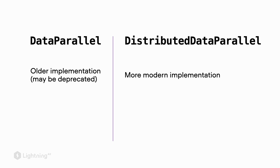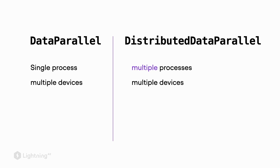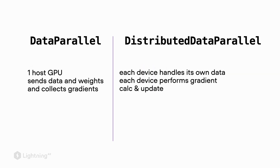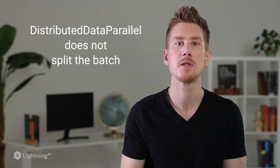To summarize the differences: DataParallel is the older implementation and may be deprecated in the future, while distributed data parallelism is the more modern and recommended approach. DataParallel is essentially a single process for multiple devices, whereas DDP uses multiple processes for multiple devices. In DataParallel, one host GPU sends data and weights and collects gradients. In DDP, each device handles its own data, performs its own gradient calculation and update. With a fast connection between GPUs, DDP is usually faster due to fewer transfers.